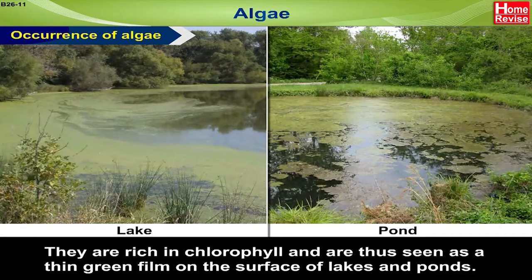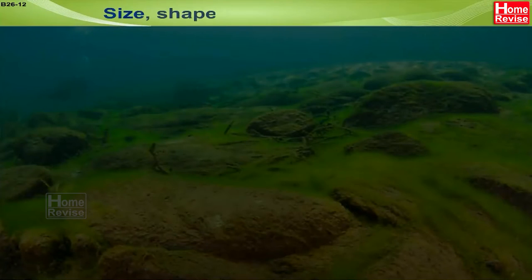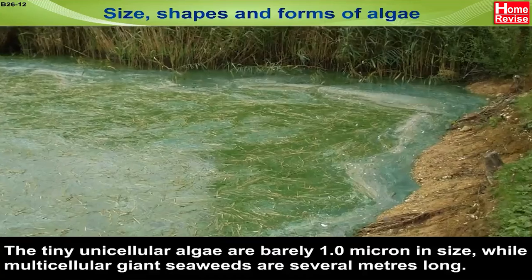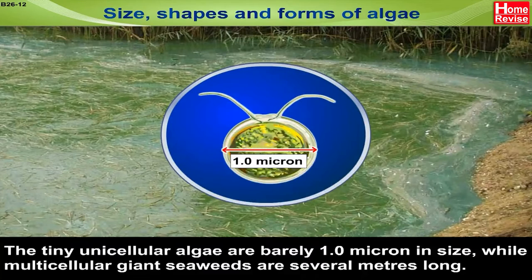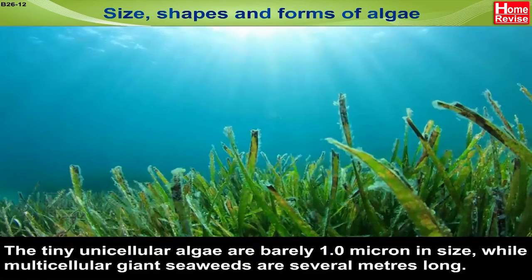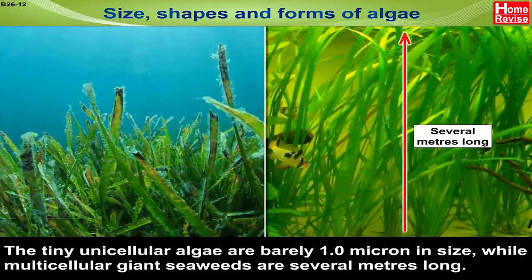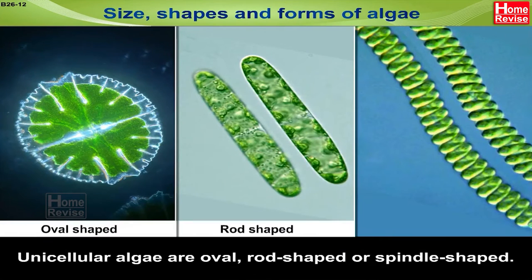Have you ever noticed them? For this reason, they are also known as grass of water. The tiny unicellular algae are barely 1 micron in size, while multicellular giant seaweeds are several meters long. Unicellular algae are oval, rod-shaped or spindle-shaped.